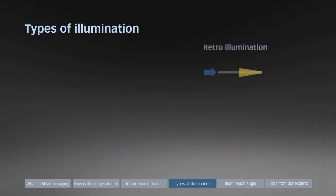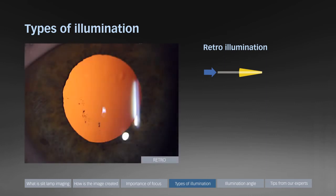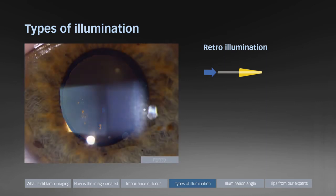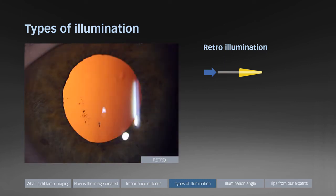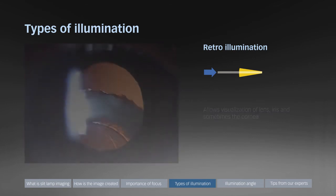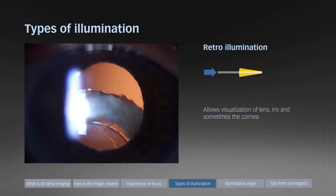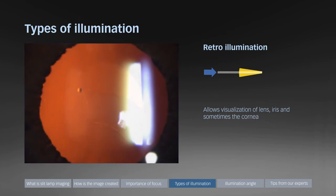Retro illumination uses light reflected from the retina coming towards the microscope. For comparison, the same eye with direct focal illumination and here again with retro illumination. This can allow excellent visualization of pathologies that occur in the lens, the iris, and sometimes the cornea.